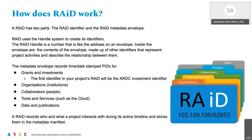How does RAID work? RAID has two parts: an identifier and a metadata envelope. The identifier uses the ARDC handle service. The handle is a number you could think of as an address on an envelope or folder. The metadata envelope is made up of other identifiers that represent project activities and describe the relationships between them. In that metadata envelope we have grants and investments, organisations and institutions, collaborators — those people who resource the project — tools and services such as cloud services or instrumentation, and also data and publications. The very first identifier that will go into your RAID is the ARDC investment identifier, so that Crossref DOI will automatically be added to your RAID.